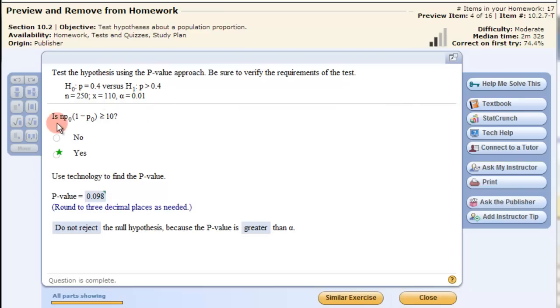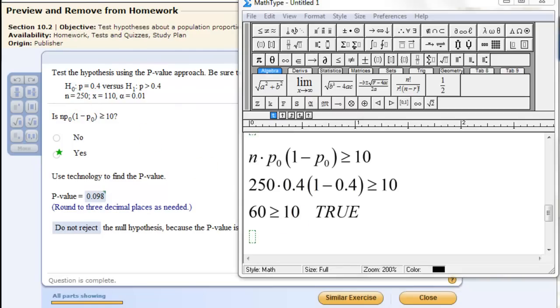We need to figure out this information first, and that just is by putting the p₀ and the n in there and calculating this out. You can do that by hand. So we just take the inequality, plug in the information, and we see that this left-hand side is 60, and that's greater than or equal to 10, so it's true.